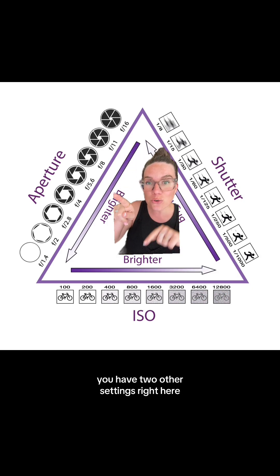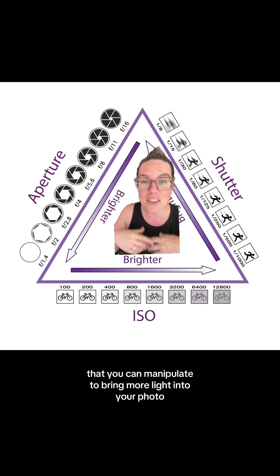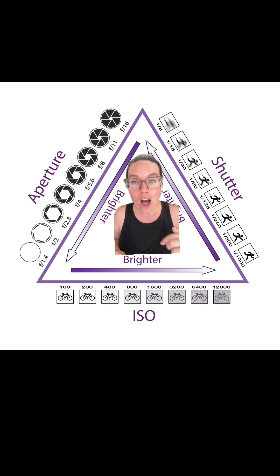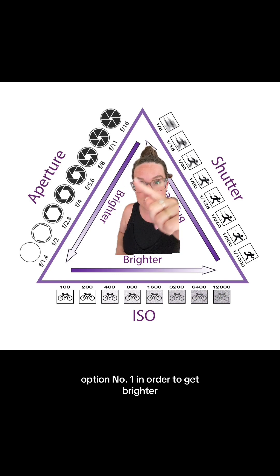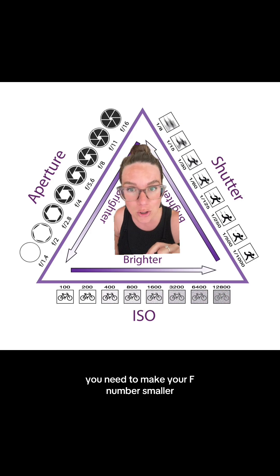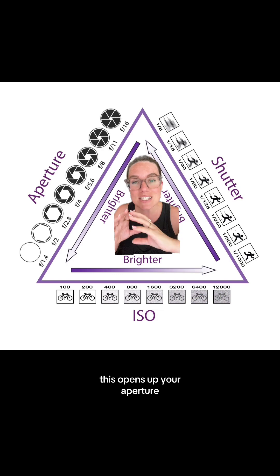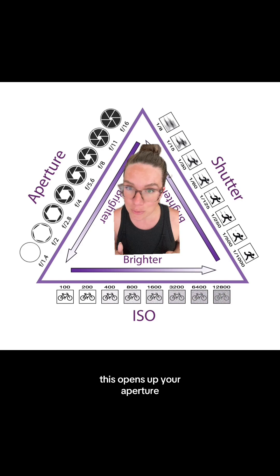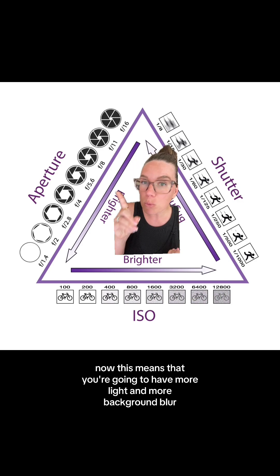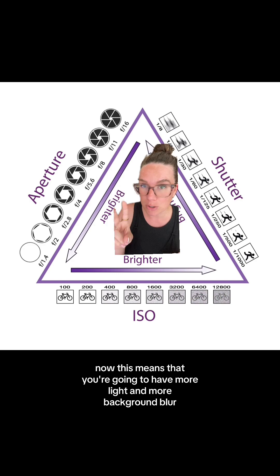You have two other settings right here that you can manipulate to bring more light into your photo. Option number one: in order to get brighter, you need to make your F number smaller. This opens up your aperture, which means you're going to have more light and more background blur.